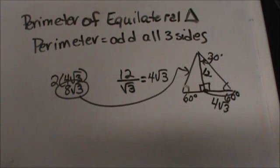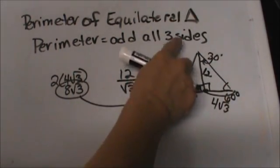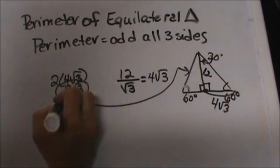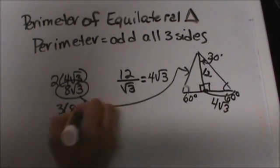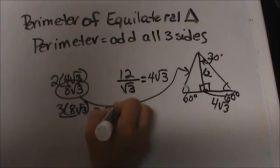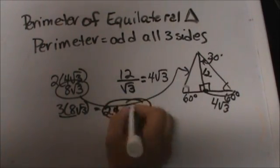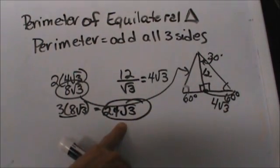Now to take that side I am going to multiply it by 3 because I have 3 equal sides. So 3 times 8 square root of 3 gives me 3 times 8 is 24. And you always just stick the square root of 3 next to it and that would be my perimeter.